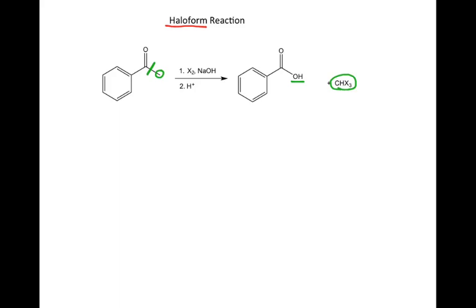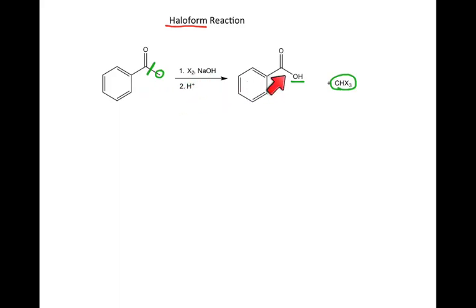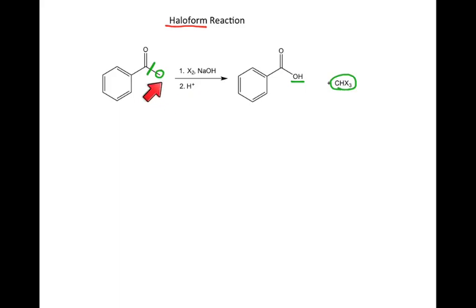So again, in this reaction you simply take a methyl ketone, treat it with X2 and sodium hydroxide, followed by H-plus workup, and you get out a carboxylic acid and your haloform. This reaction is a little tricky to recognize — what you have to remember is that it has to be a methyl ketone upon treatment with X2 and sodium hydroxide.